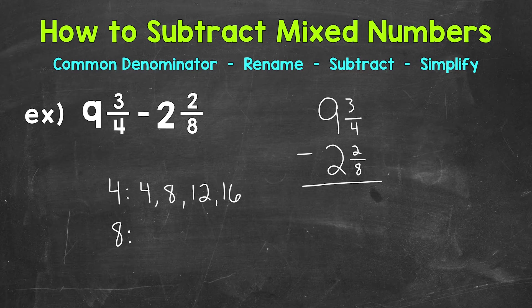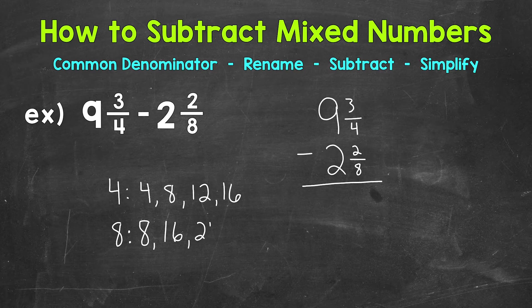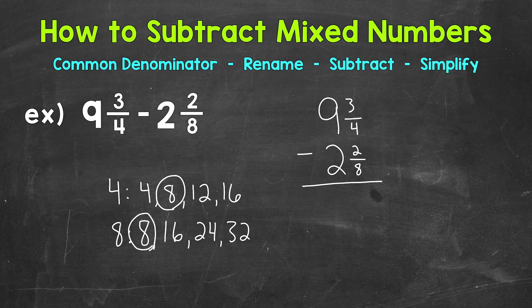Now let's write out 4 multiples of 8. So we have 8, 16, 24, 32. Once we have that, we can look for the least common multiple, which is going to be the smallest number in value that they share, which is going to be 8. So 8 is going to be our least common denominator.